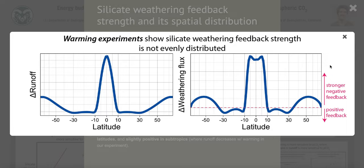The feedback is also present — as a negative feedback — in the mid and high latitudes. However, we actually see a positive feedback in the subtropics, which means that when things get warmer, weathering fluxes actually decrease in the subtropics in this simulation.